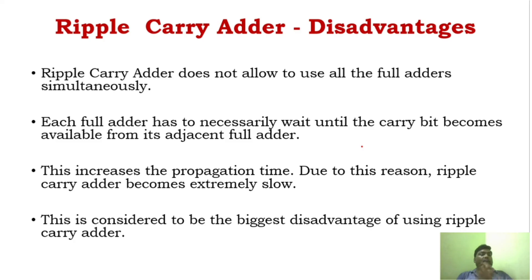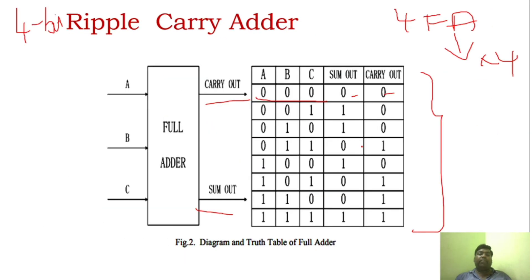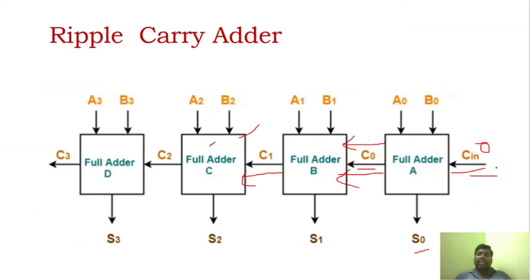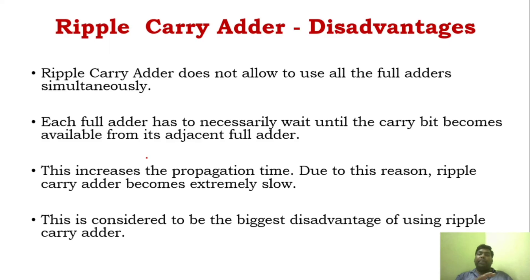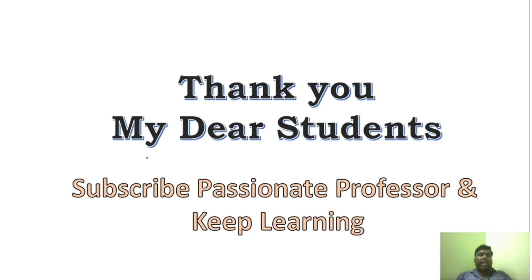Now you need to understand the drawback of ripple carry adder. As I said, each and every full adder will work only after receiving the carry — only if the previous carry is generated does the next adder become active. So each adder has to wait until the previous adder sends the carry. This means the delay will be high in ripple carry adder; the operation is not performed in parallel. It takes more propagation delay and will be extremely slow. That is the biggest disadvantage of ripple carry adder, which will be overcome in carry lookahead adder, which is a fast adder.